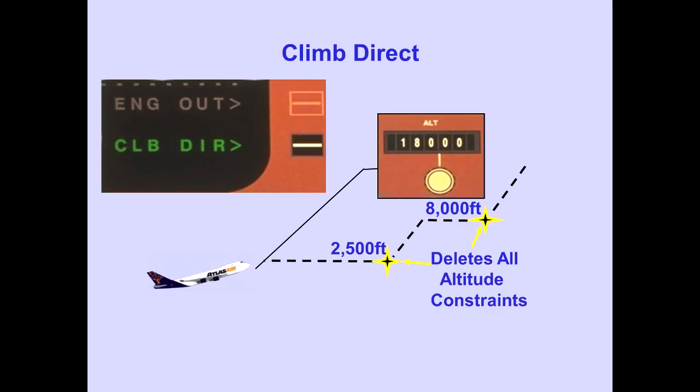Line selecting Climb Direct deletes all altitude constraints between the current altitude and the MCP displayed altitude. The climb speed schedule remains the same. Remember, all modifications must be executed with the Execute key before they will become active.